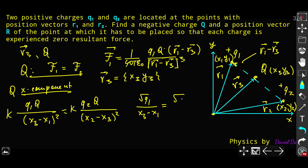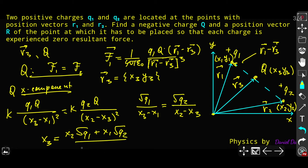We can now express the X3 coordinate. Solving, we get: X3 equals (X2·√Q1 plus X1·√Q2) over (√Q1 plus √Q2). That's the final expression for the X3 component of the position vector pointing to charge Q.